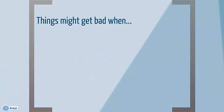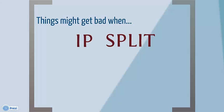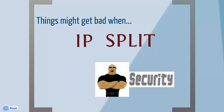During communication, things will get problematic when we split the locator and the identifier attributes of the IP, as some security and privacy issues may arise. The simplest of which is that the corresponding node may know the new location of the mobile node.